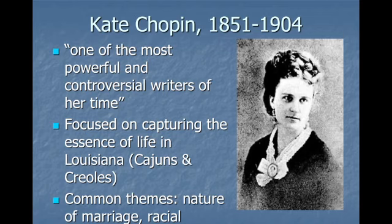Kate Chopin was likely one of the most powerful and controversial writers of her time. She focused on capturing the essence of life in Louisiana, particularly the local color from the Cajuns and the Creoles, of which she herself was a part. Her common themes included the nature of marriage, racial prejudice, and female equality. Chopin had grown up with essentially a mother and grandmother raising her, and her husband died after about a dozen years, so for most of her life she was in charge of her family, creating income, and raising her children. These experiences made feminist equality and the nature of marriage key themes for her.